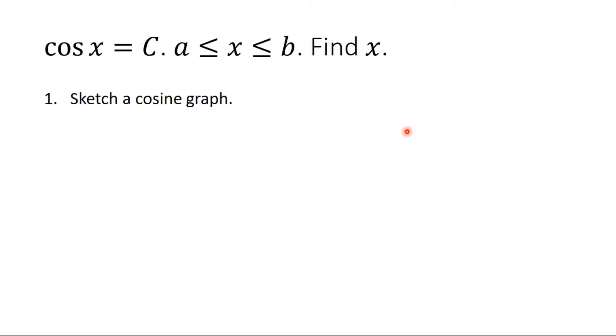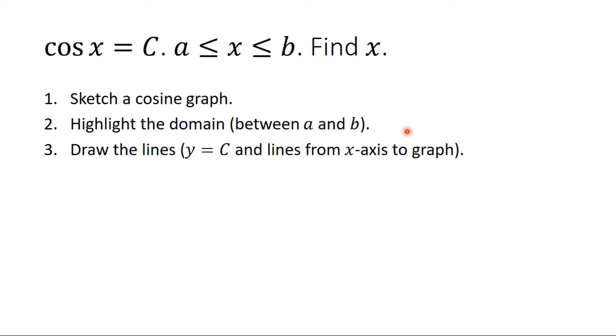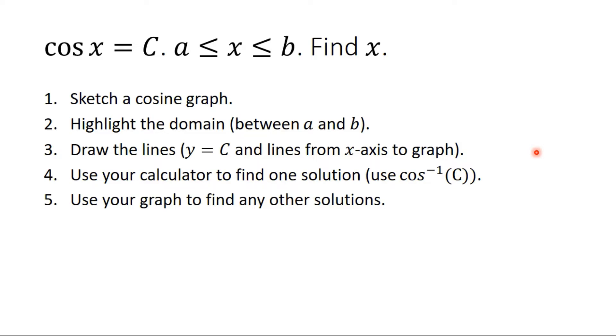We are first going to sketch the cosine graph every single time. Then we are going to highlight the domain that we're talking about. Then we are going to draw in the lines y equals c and the lines going from the x-axis to the graph. Then we are going to use our calculator to find one of the solutions for the inverse cos. And then we can use our graph to find the other solutions.